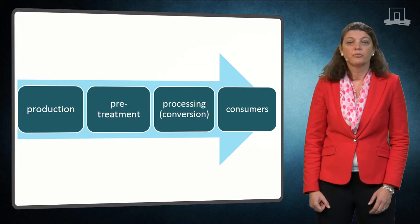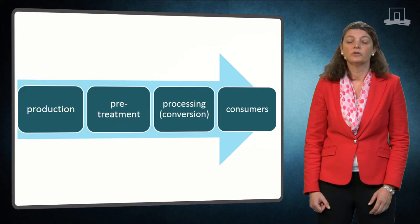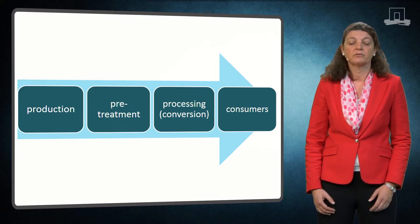Key stages along the supply chain are production, pretreatment, conversion and, at the end, the use of final biobased products by consumers.